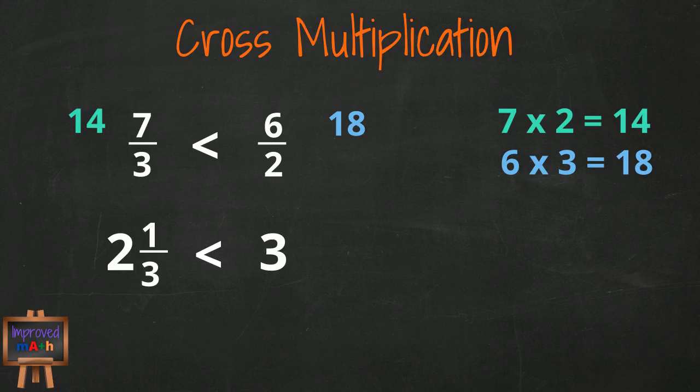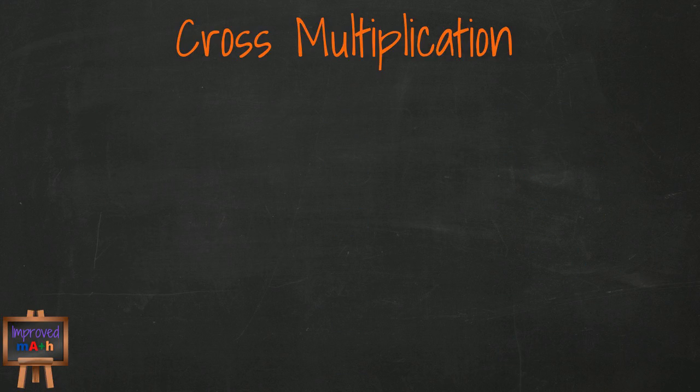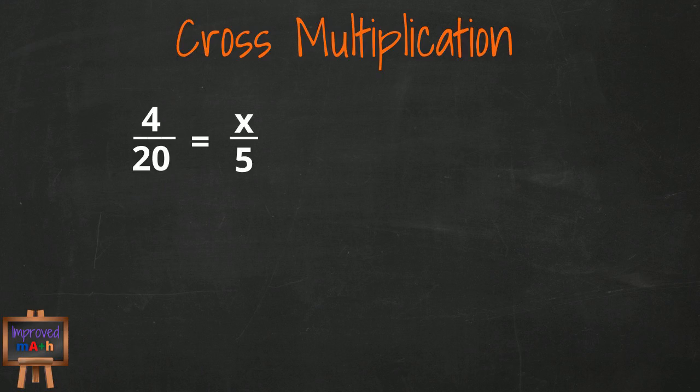But what if you were given a problem like this, and you were asked to make fractions equivalent? 4 over 20 equivalent to what over 5? Since we know we can use cross multiplication to figure out which one is greater, we should be able to use the same methodology to make them equivalent.